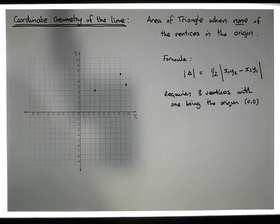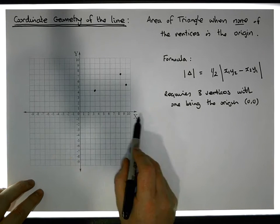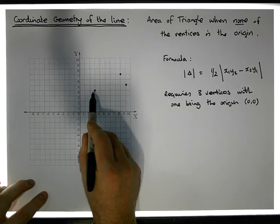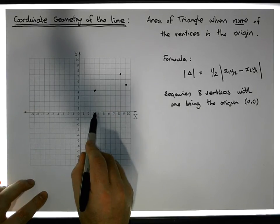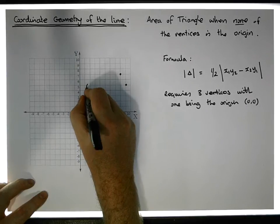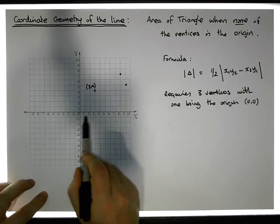So what happens when we have three vertices and none of them are (0,0)? How do we calculate the area of a triangle in that case? As an example, here's three vertices plotted in the xy coordinate system. The coordinates of this first point are three in the x direction and four in the y direction, so this point is (3,4).